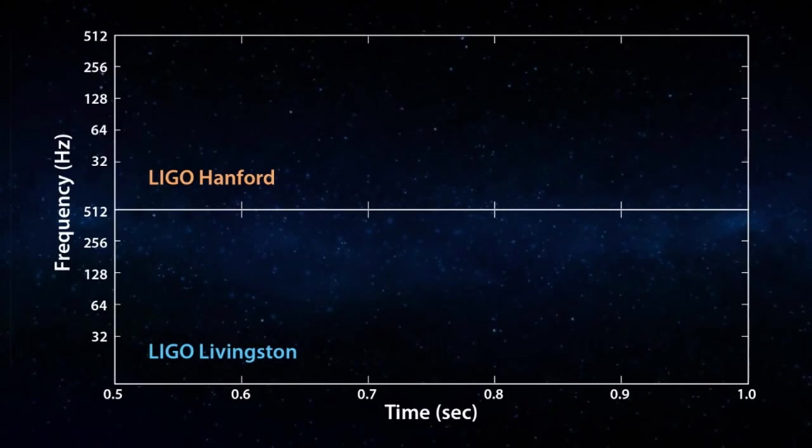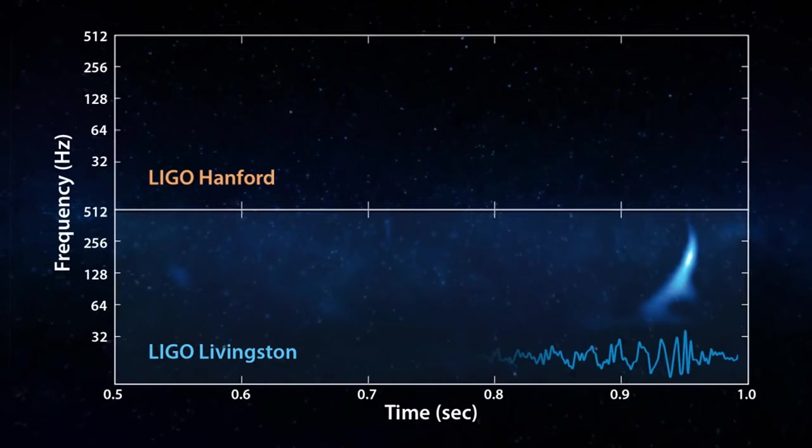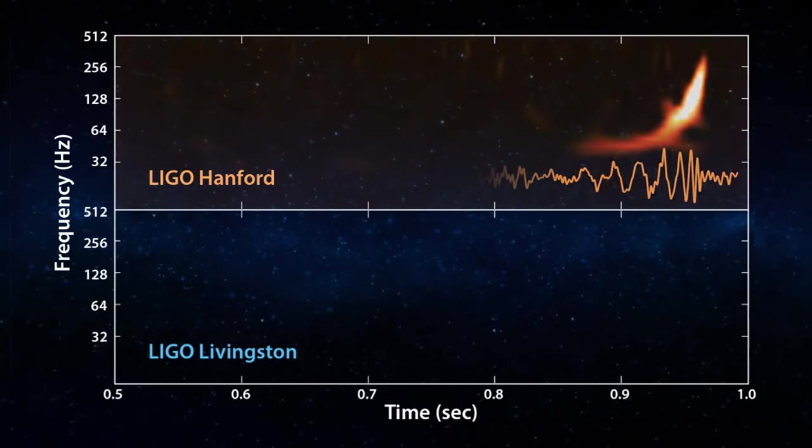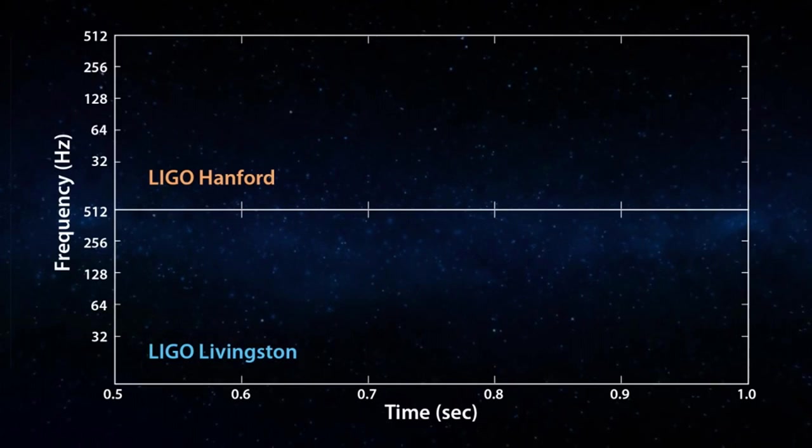At 9:50 and 45 seconds coordinated universal time on the 14th of September 2015, a signal was detected by the LIGO detector in Livingston and 6.9 milliseconds later in Hanford. It was a chirp signal that lasted just over two-tenths of a second. When we route the wave into a sound generator, here's what it sounds like.